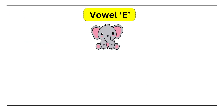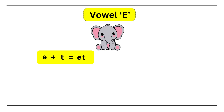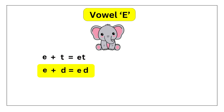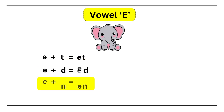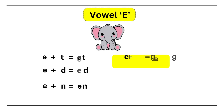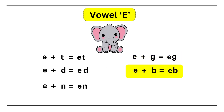Let's move on to Vowel E. E-T: ET. E-D: ED. E-N: EN. E-G: EG. E-B: EB.